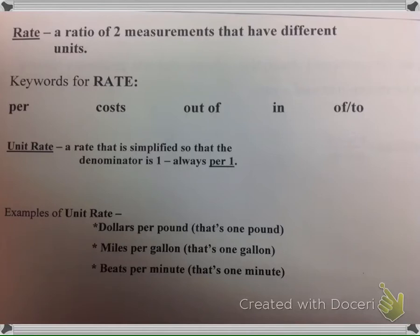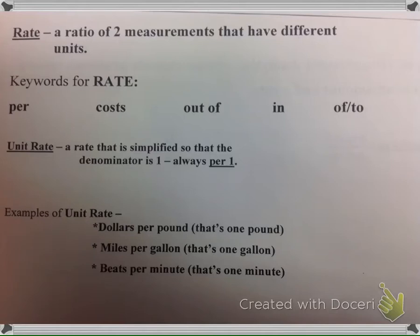A rate is a ratio of two measurements that have different units. A unit rate is per 1 — it's simplified so that your denominator is 1. You want to find out how much something is per 1: how many pounds per ounce, what was your mileage per hour. For example, dollars per pound tells you how much you're paying per 1 pound of bananas; miles per gallon is per 1 gallon; beats per minute is per 1 minute.